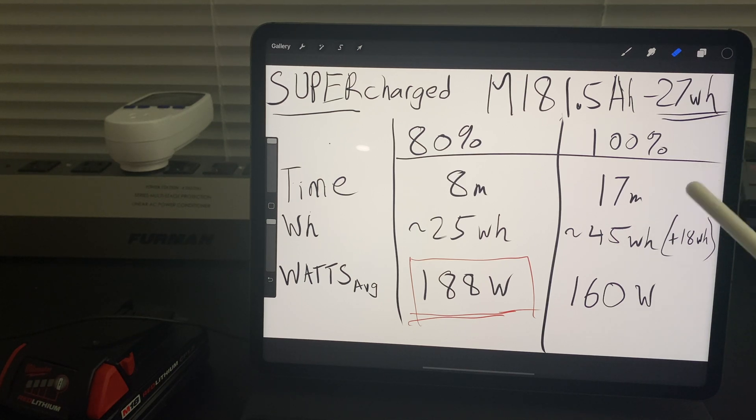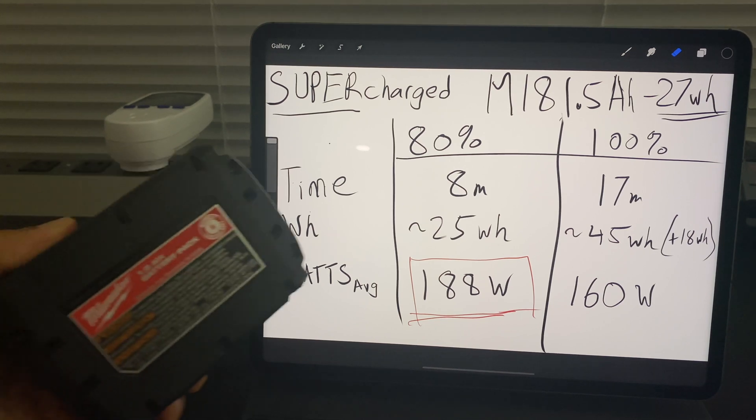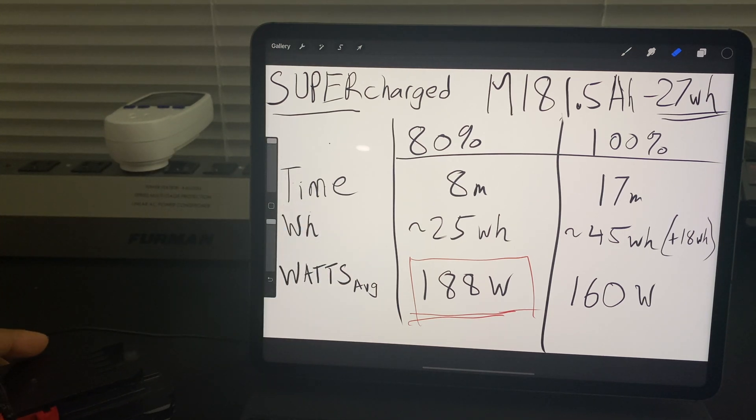At the 100 percent mark which was at 17 minutes we used up 45 watt hours which tells us that an additional 18 watt hours went up as heat to charge a 27 watt hour battery. So a pretty inefficient operation for the most part. On average it used up about 160 watts to charge up this battery and that is pretty significant. Keep in mind that this thing has five 18650 cells and it's using up on average 160 watts or for the 80 percent mark an average of 188 watts.